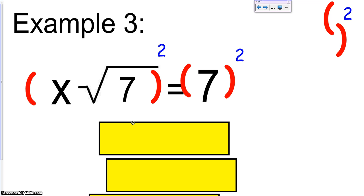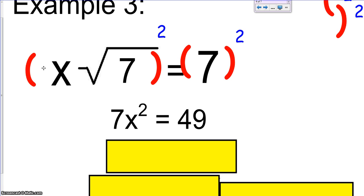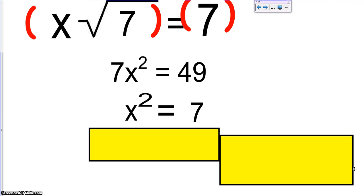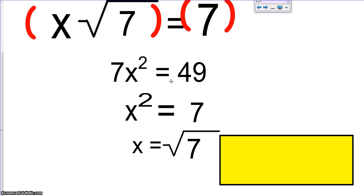On the left side, we have two terms being multiplied, so we definitely want to distribute the square here, the square here. That's going to leave us with 7x squared equals 49. We want to isolate the variable by dividing. So x squared is equal to 7. I want to take the square root of each side. Therefore, x equals the square root of 7.